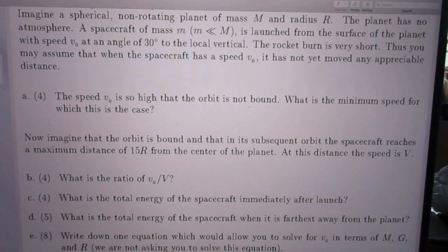The rocket burn is very short. Thus, you may assume that when the spacecraft has a speed V0, it has not yet moved any appreciable distance. The speed V0 is so high that the orbit is not bound. What is the minimum speed for which this is the case?